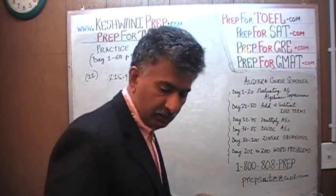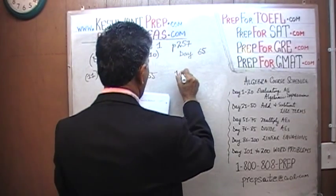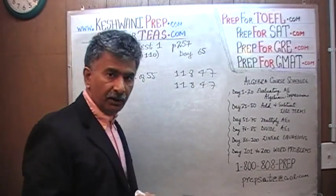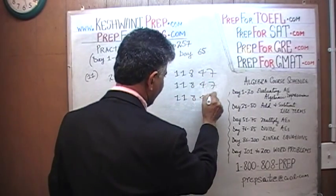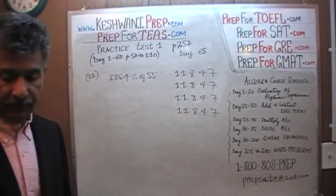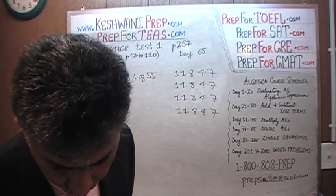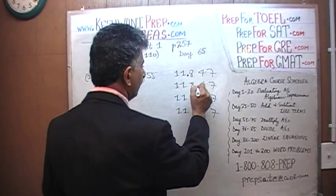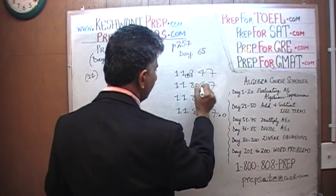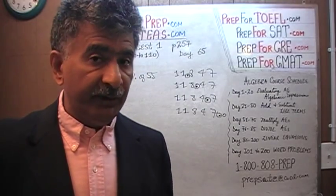Here are the answer choices. The first is 111847, the second is 11847, the third is 1184.7, and the fourth is 118.47. The only difference is the decimal points — they're just moving the decimal point. Each answer choice is 10 times the previous one. They're very far apart; they're just testing whether you know how to place your decimal.